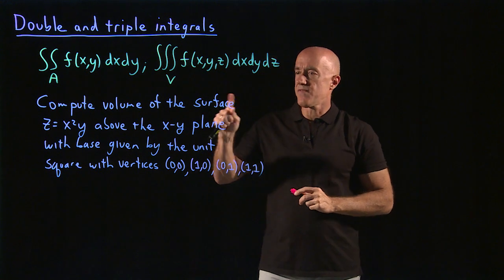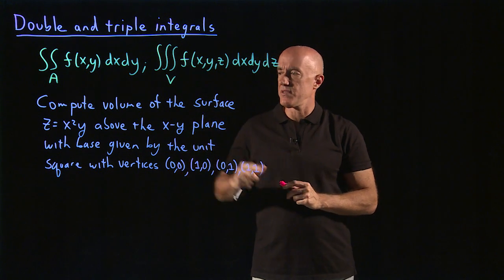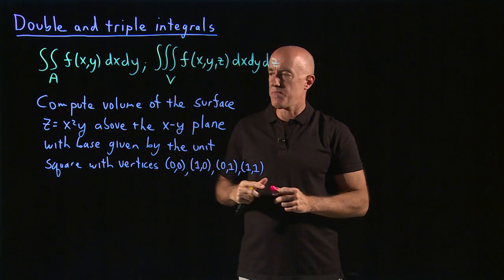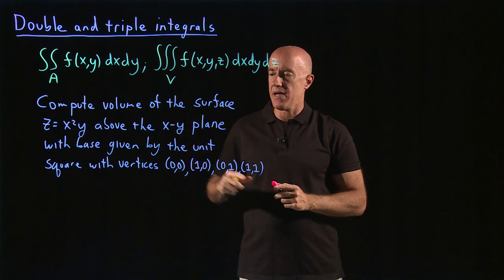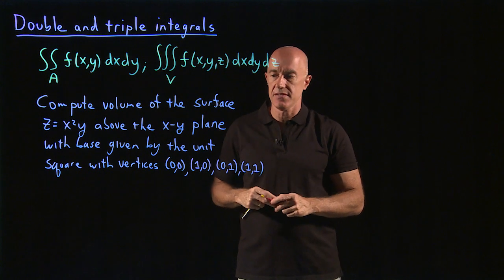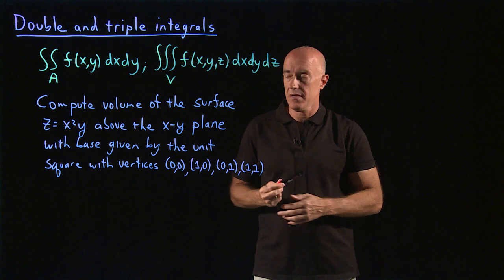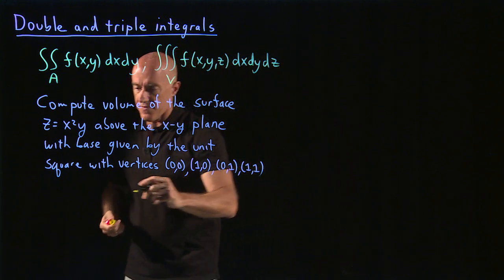Compute the volume of the surface z equals x squared y above the xy plane with base given by the unit square with vertices (0,0), (1,0), (0,1), and (1,1).